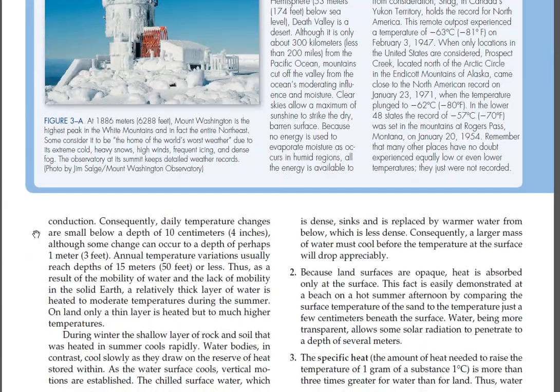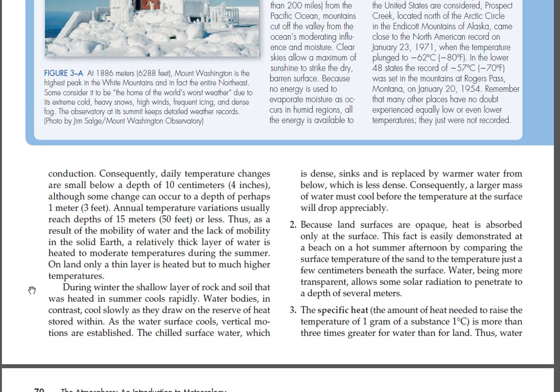Consequently, daily temperature changes are small below a depth of 10 centimeters (4 inches), though some change can occur to a depth of perhaps 1 meter (3 feet). Annual temperature variations usually reach depths of 15 meters (50 feet) or less. As a result of the mobility of water and the lack of mobility in the solid earth, a relatively thick layer of water is heated to moderate temperatures during the summer. On land, only a thin layer is heated but to much higher temperatures. During winter, the shallow layer of rock and soil that was heated in summer cools rapidly. Water bodies, in contrast, cool slowly as they draw on the reserve of heat stored within.